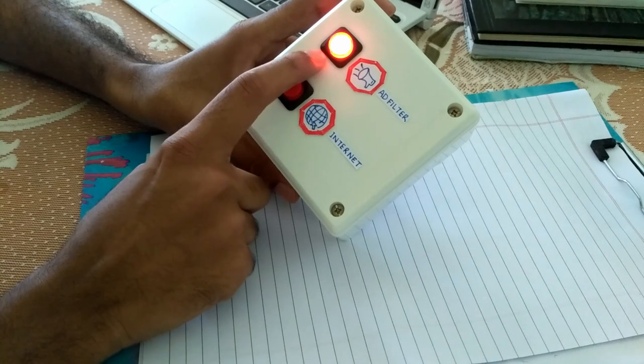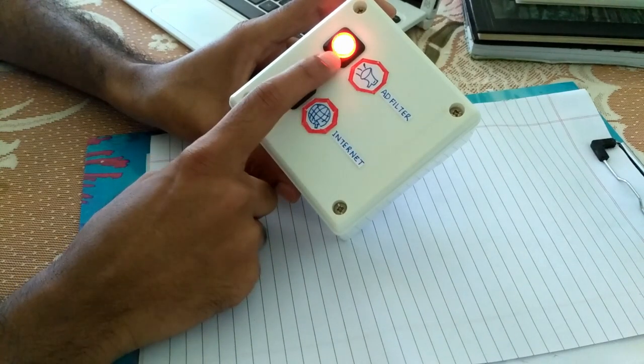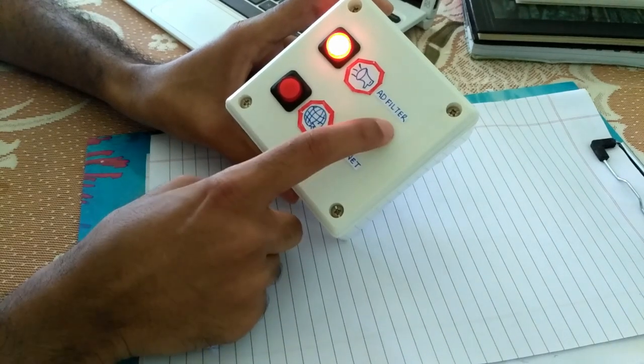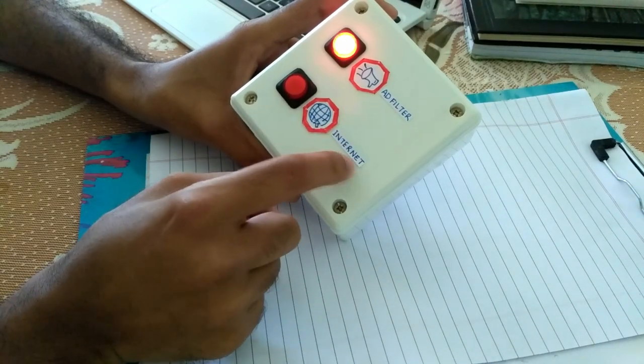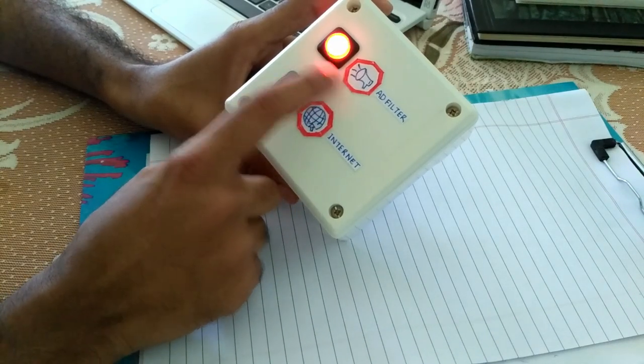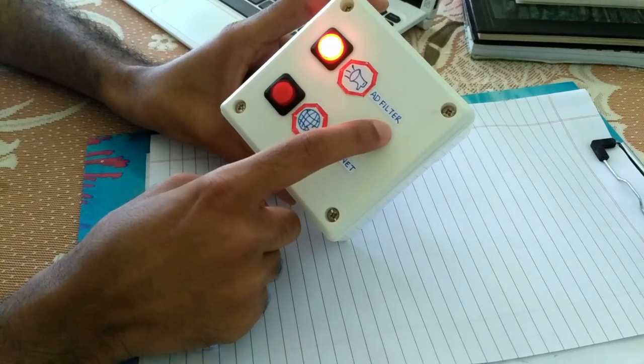When I press the ad filter push button it will either enable or disable the network-wide ad filter, and I will get confirmation in the form of this indication. Now the indication is glowing, meaning that my ad filter is enabled.